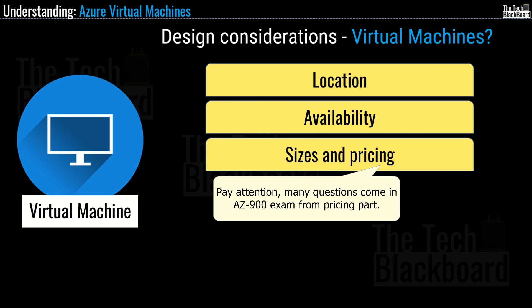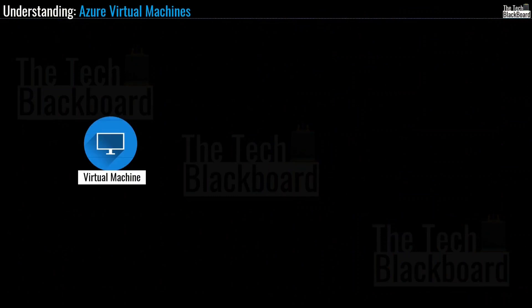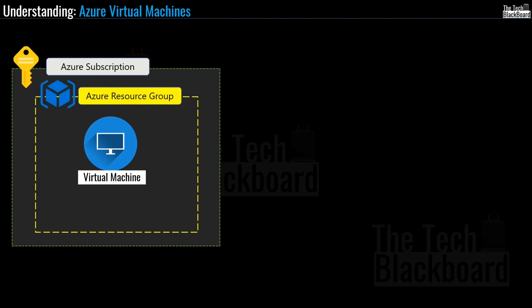Now comes the very important section: understanding resources required for virtual machines. Virtual machines are not singleton resources — when you create a virtual machine, many other resources also get created. It's a critical concept to understand, otherwise you will lose control of your data and cost. First and foremost, virtual machines live inside a subscription, and there must also exist a resource group under which the virtual machine will reside. These two resources — subscription and resource group — must pre-exist before you create a virtual machine.